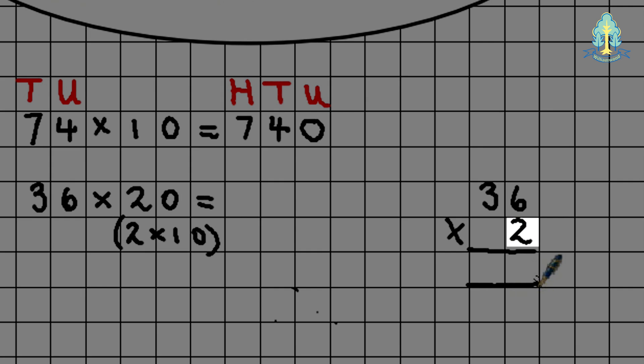So 2 times 6 is 12. 2 times 3 is 6, adding our 1 is 7, gives me 72. But as we're multiplying by 20, we still have to multiply by 10. So the same strategy applies. Now we've got 72 multiplying by 10, so our 2 in the units column moves up to tens. The 7 in the tens column moves up to the hundreds, and we place our 0 in the units to hold that place, giving our answer 720.